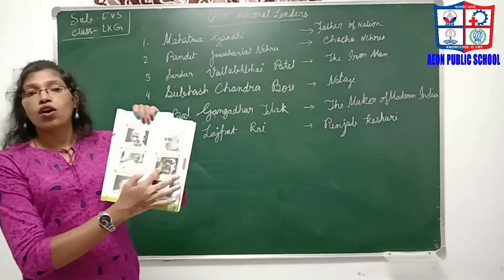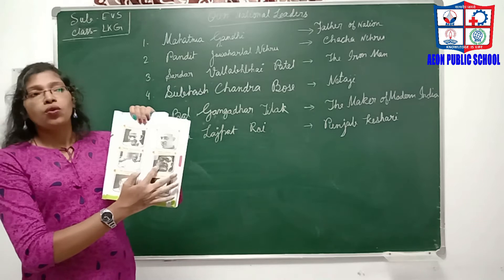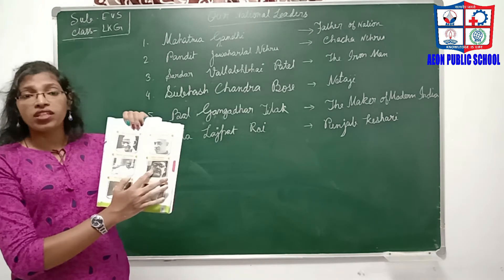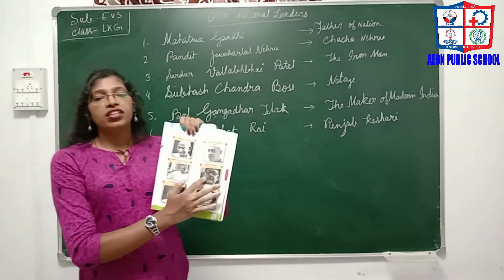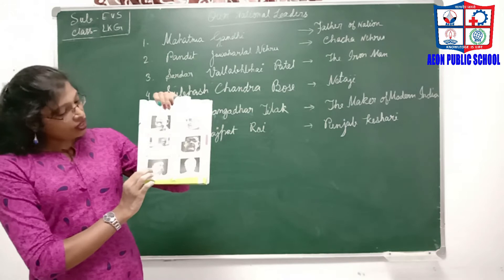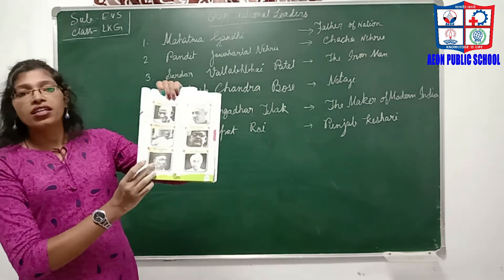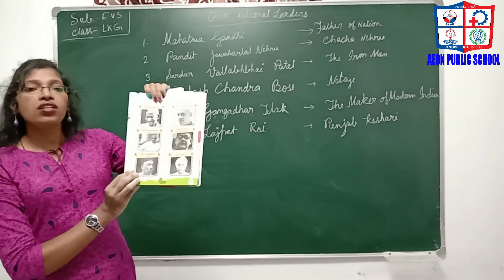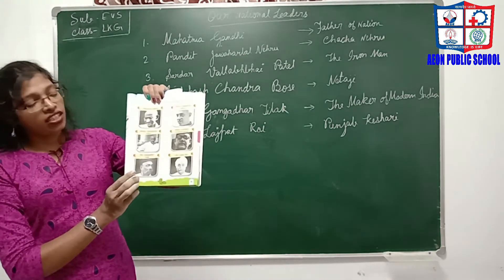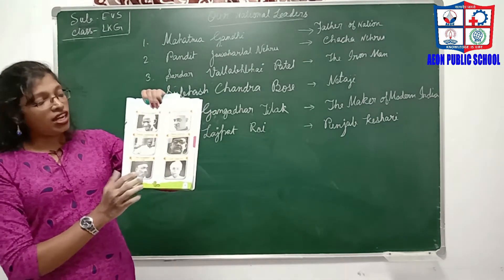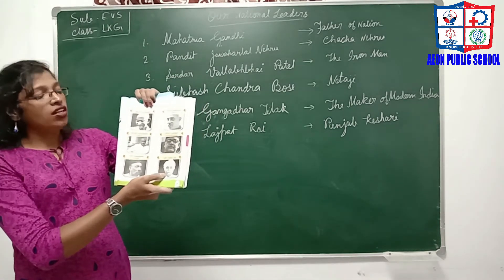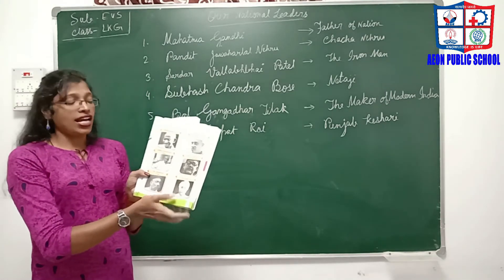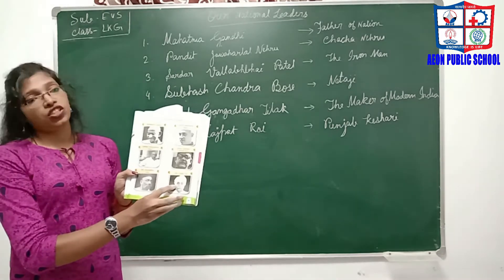This is the picture of Subhas Chandra Bose, who is known as Netaji. He played an important role to fight against the British. Then this is the picture of Barga Gadadila. He is known as the maker of modern India. And the last picture is Lala Rajpat Rai. He is known as Punjab Kesari.